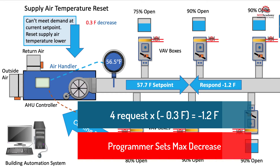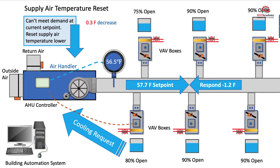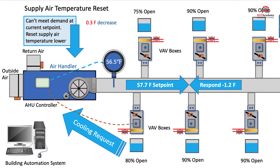Systems using an air side economizer will have more time when the economizer is in use because the supply temperature is set higher. This allows outdoor air to be used instead of the compressor to provide cooling, which saves on energy.